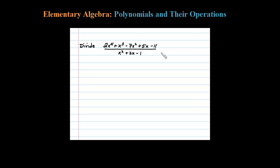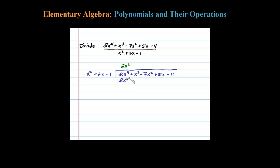We're asked to divide two polynomials using polynomial long division. The goal is to match the leading term, so what times x squared is 2x to the fourth? After some thought, we choose 2x squared. 2x squared times x squared is 2x to the fourth. Remember, when you multiply polynomials you have to distribute, so we also take 2x squared times 2x, which gives us plus 4x to the third, and 2x squared times negative 1 is minus 2x squared.